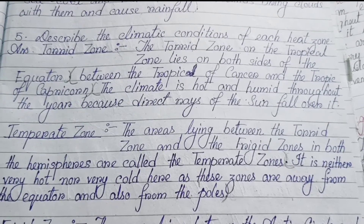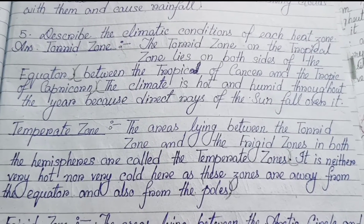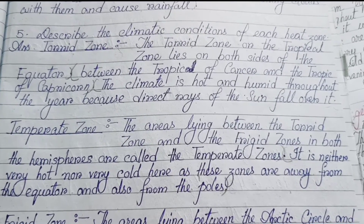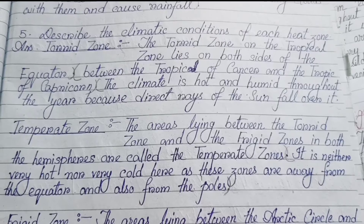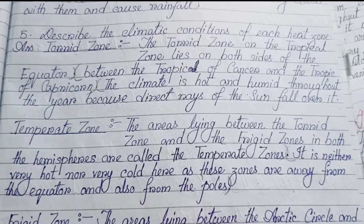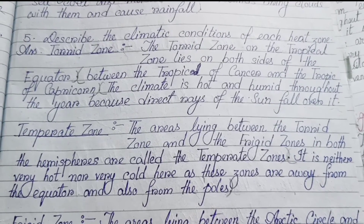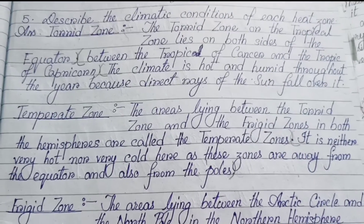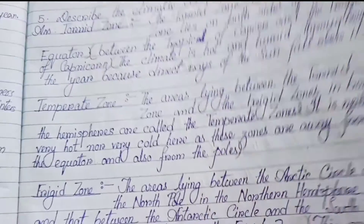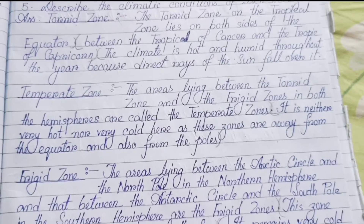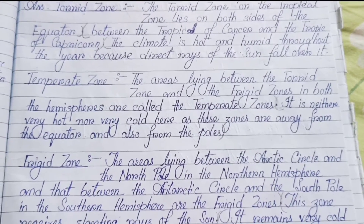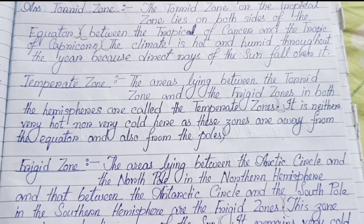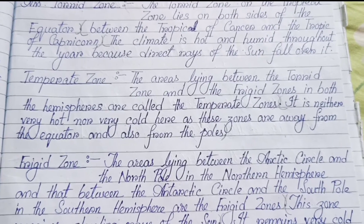Number five: Describe the climatic conditions of each heat zone. Torrid zone: the torrid zone, or the tropical zone, lies on both sides of the equator between the Tropic of Cancer and the Tropic of Capricorn. The climate is hot and humid throughout the year because direct rays of the sun fall over it.